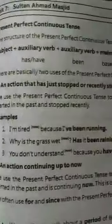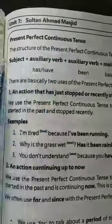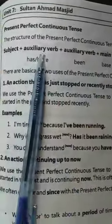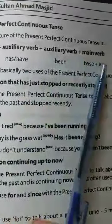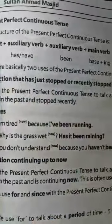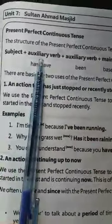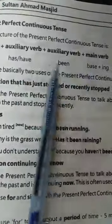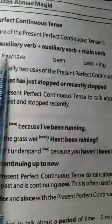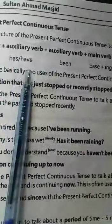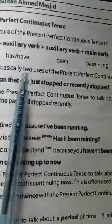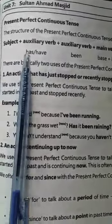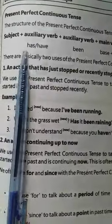Now, present perfect continuous tense. The structure is: subject + auxiliary verb + auxiliary verb + main verb, that is, subject + helping verb + main verb. The helping verbs are 'has been' and 'have been.'